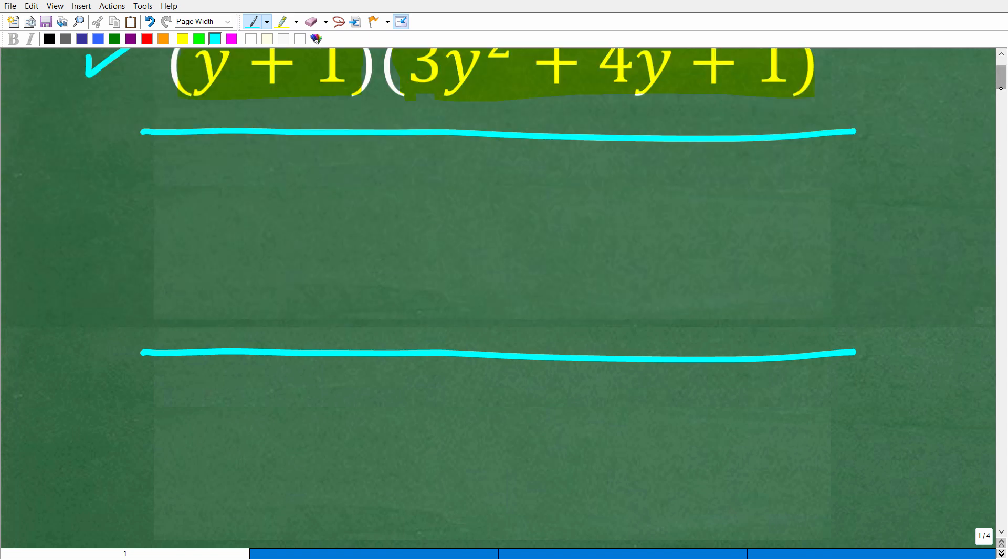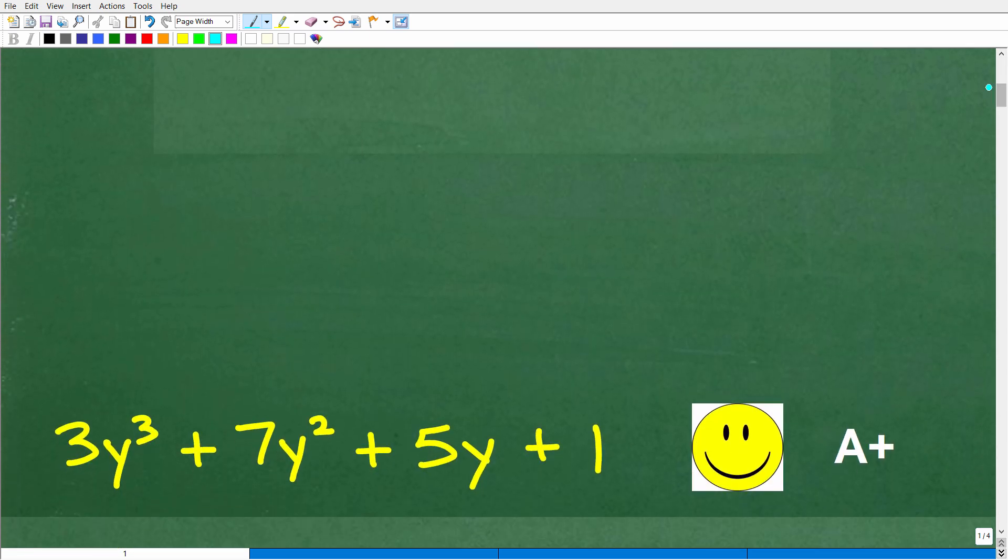All right, so let's go ahead and take a look at the correct answer. The correct answer is the following: 3y cubed plus 7y squared plus 5y plus 1.